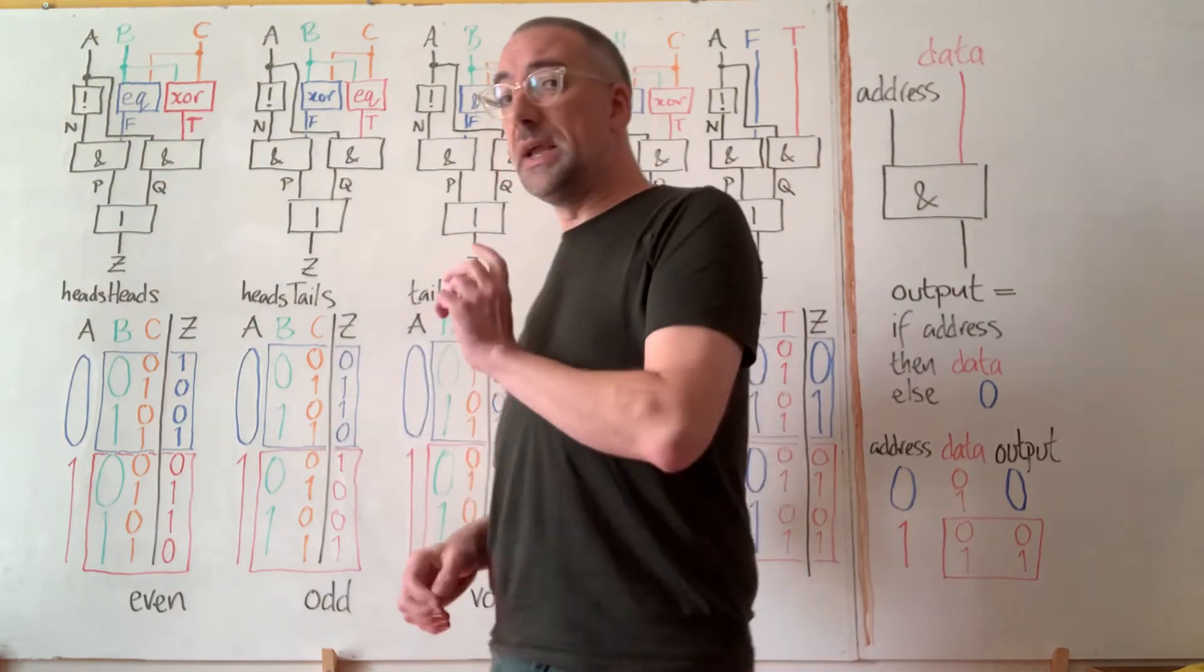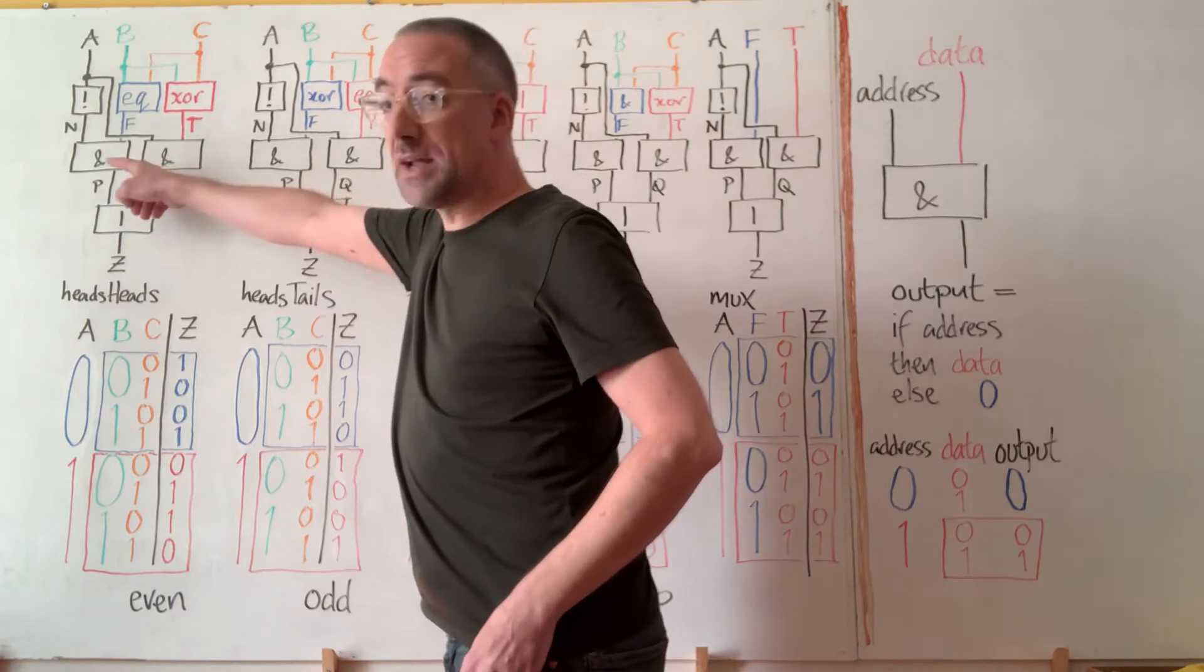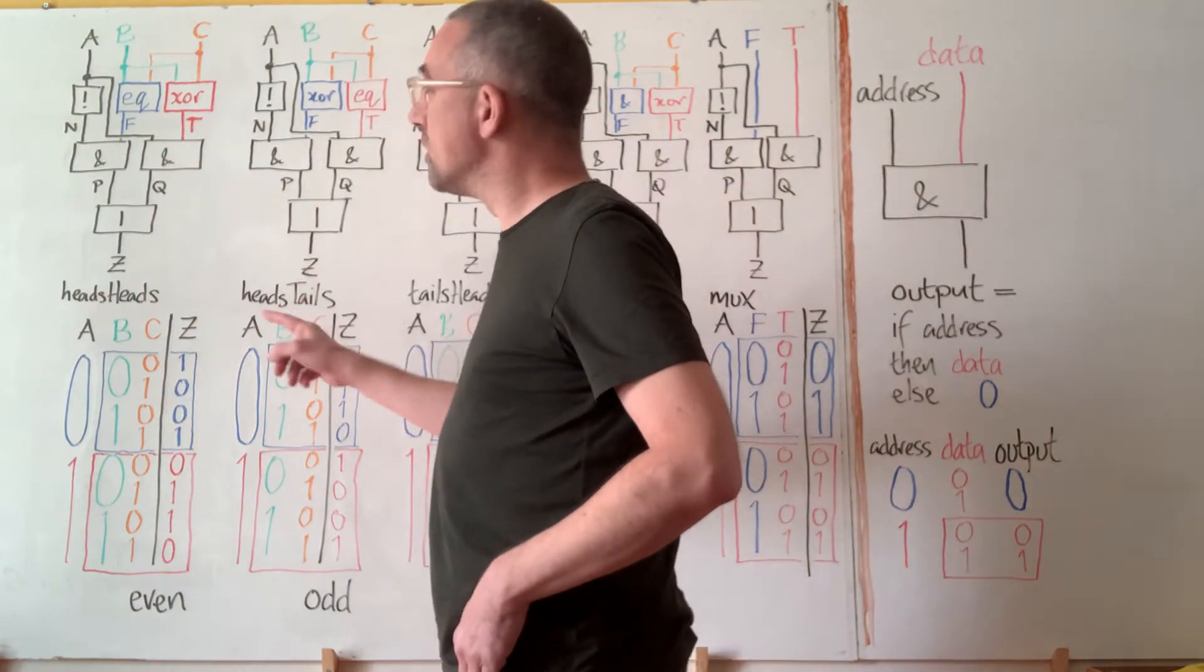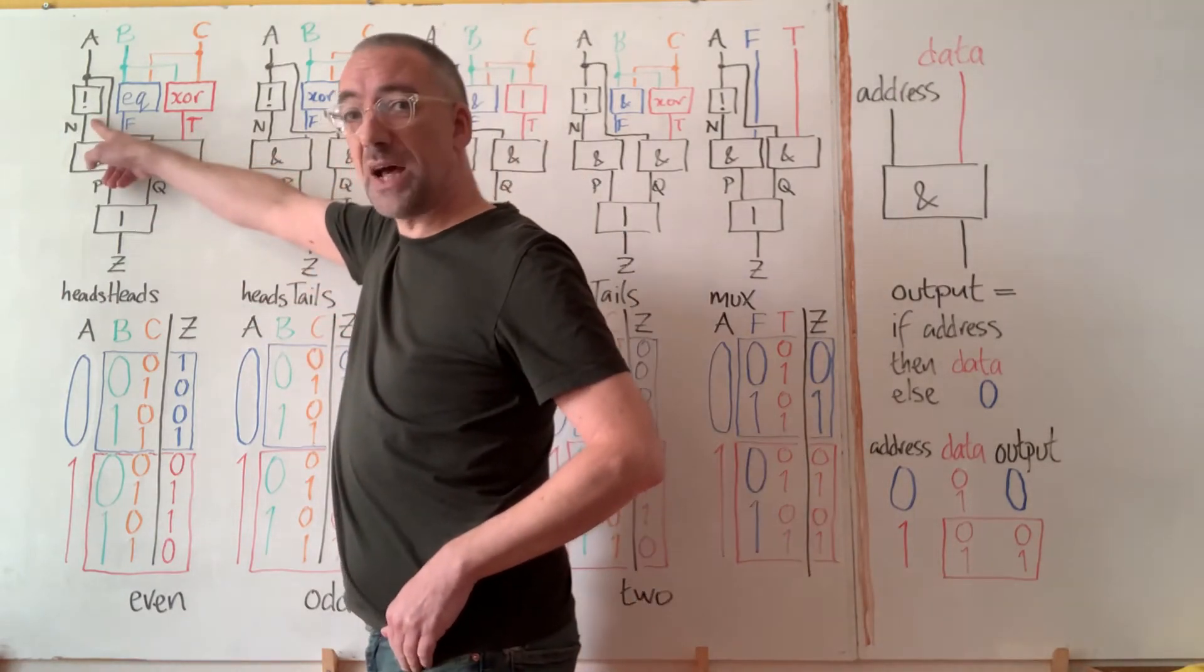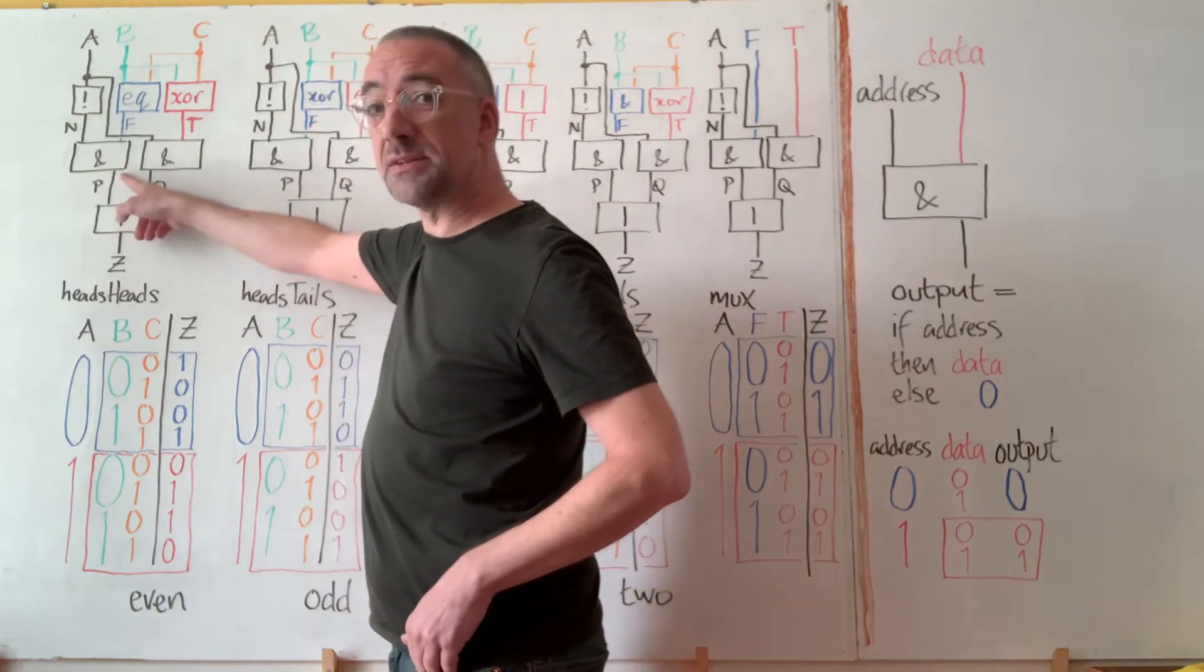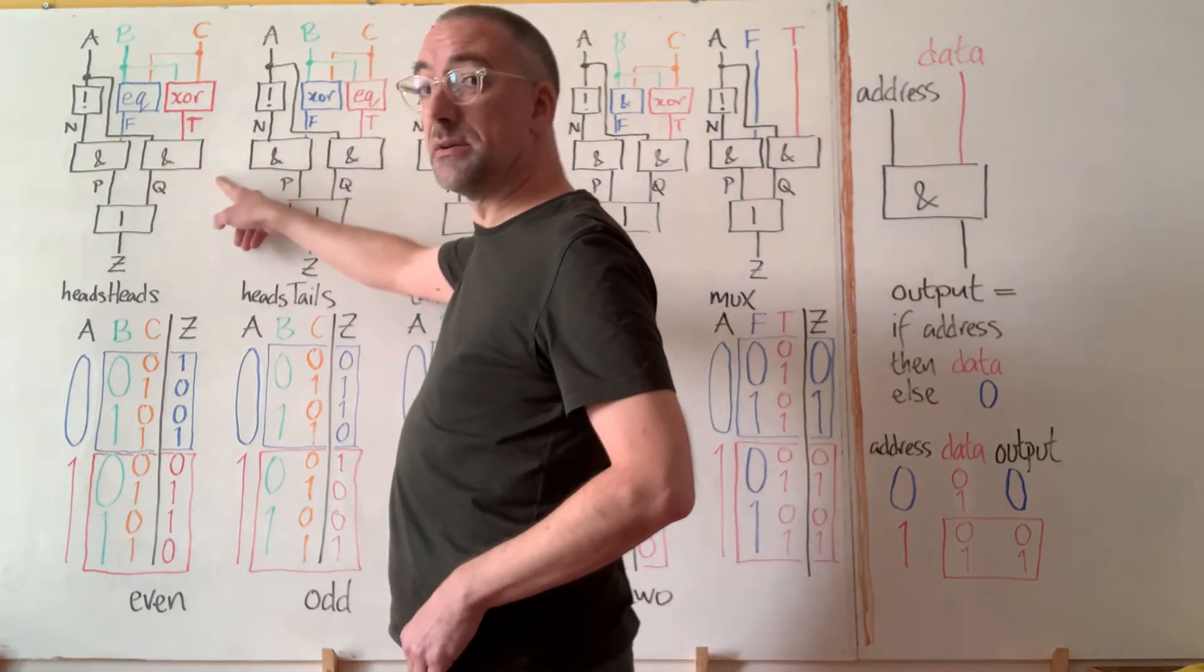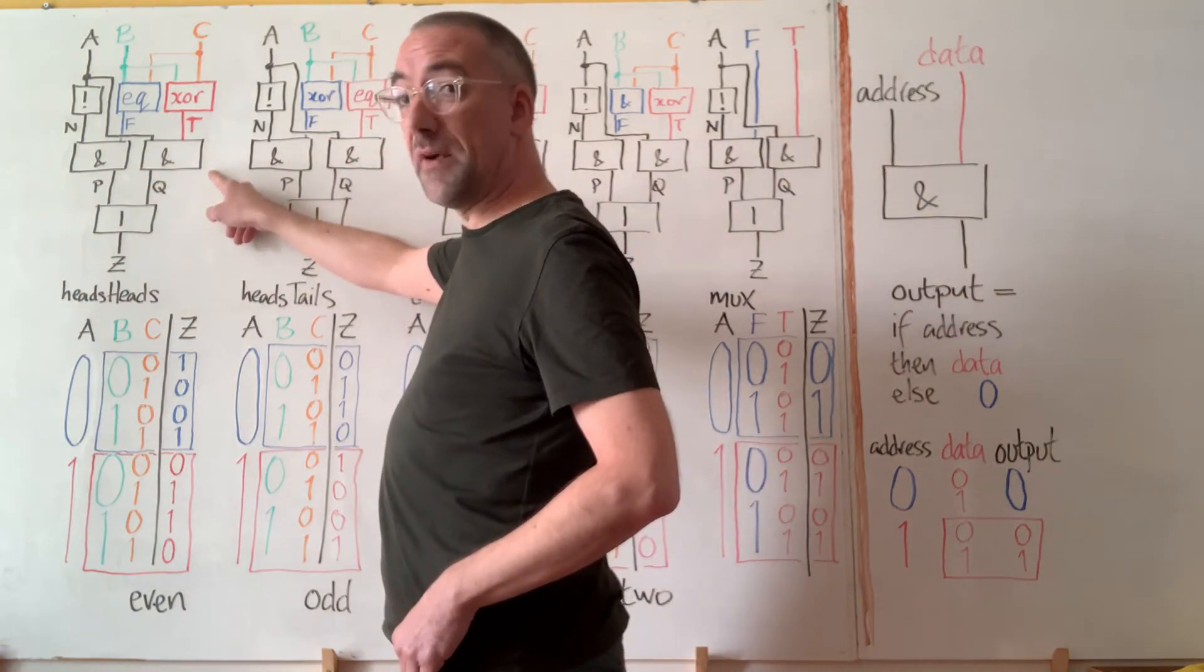Now each of these circuits that you got from the coin flips uses this AND trick twice with opposite address logic given by this NOT. So the left AND kicks in if A is zero and the right AND kicks in if A is one.